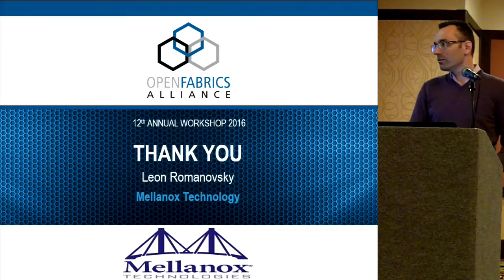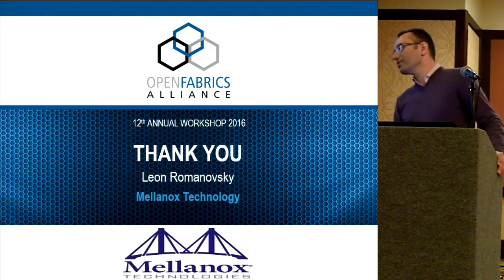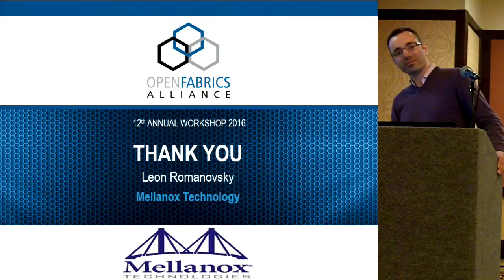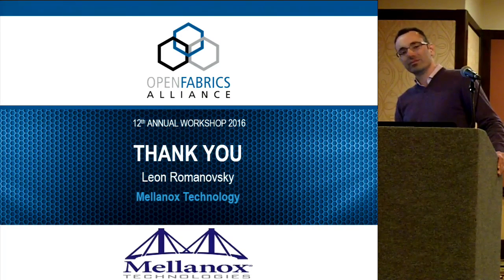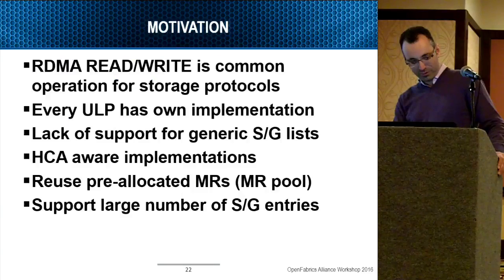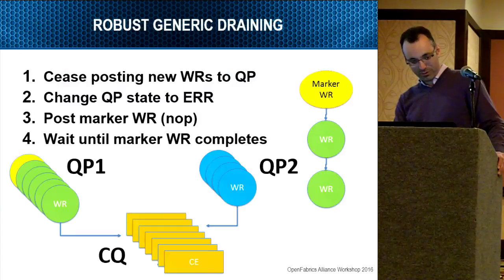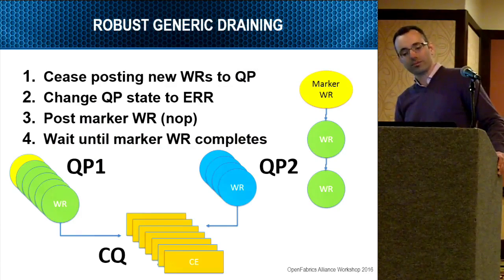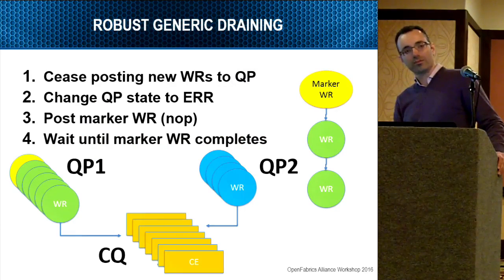A: It's already in error state. They set it to error state before sending the work request. The actual work is irrelevant, because once the queue pair is in error state it's just going to come back with a flush error anyway. They put a cookie in it so they know when the specific work request they sent has been returned.